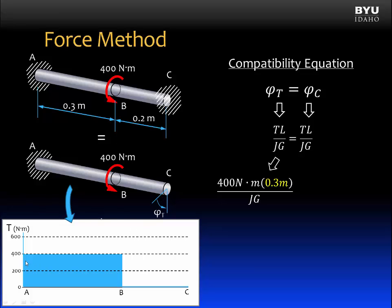the internal torque is only present from the wall at A to the external torque at B, and its magnitude is 400 newton meters. From B to C, C being the free end in this diagram, there is no additional external torques applied, so there are no internal torques. They are equal to zero from B to C.